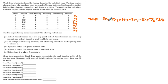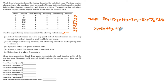We need to satisfy all the constraints. The first constraint is that we can start only five players, expressed as: x1 + x2 + x3 + x4 + x5 + x6 + x7 = 5. This is our first constraint.